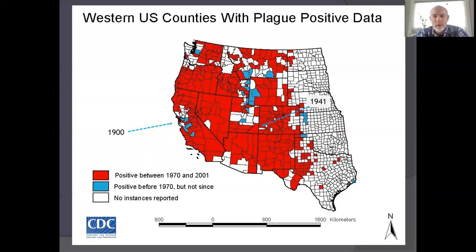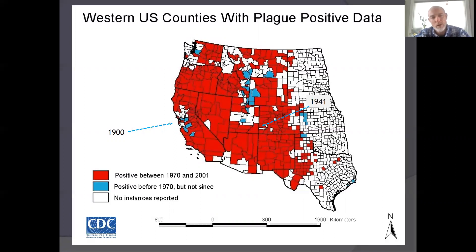Focusing into North America, this map shows us county-level data of occurrence of plague. What's important is that plague has become somewhat ubiquitous across the landscape in western North America, with introduction into the Bay Area port of San Francisco in 1900, then eastward spread with first reports in Colorado in 1941, and more recent expansion into western South Dakota in the early 2000s.